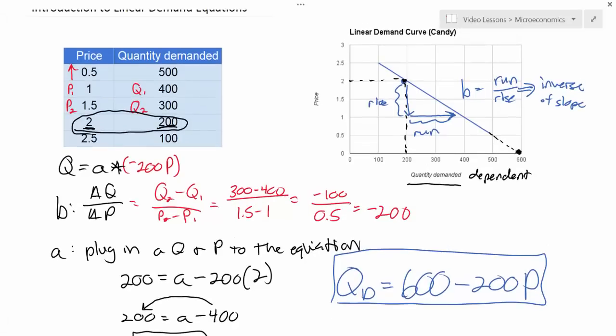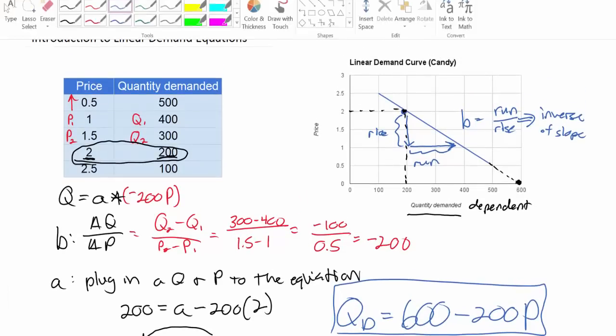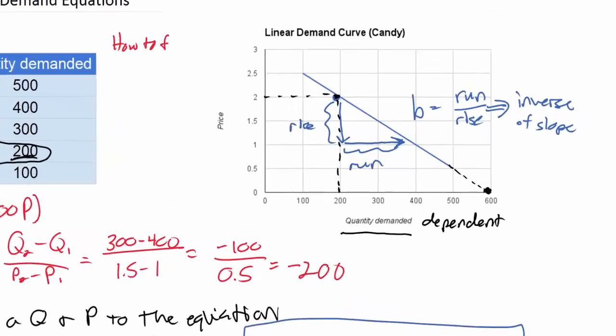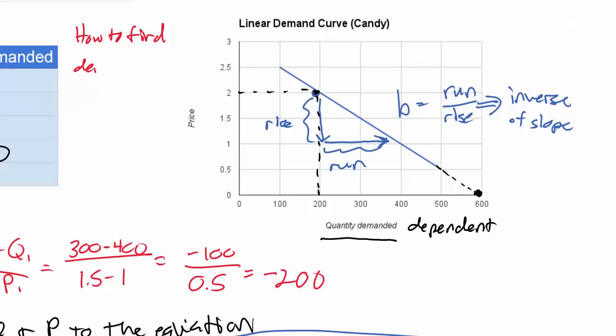You first find the b variable, let's go through the steps here. So how to find demand equation. The steps that I recommend: One, find b variable. Choose any two quantities and prices and find the change in quantity divided by the change in price from your demand schedule.